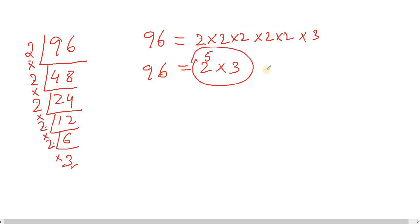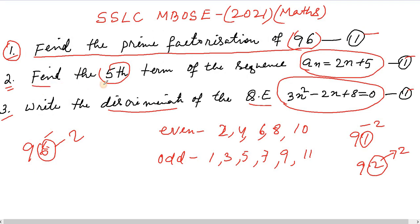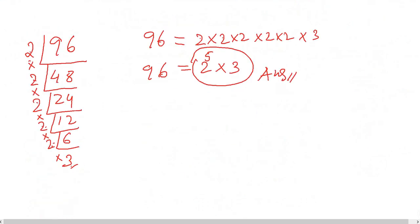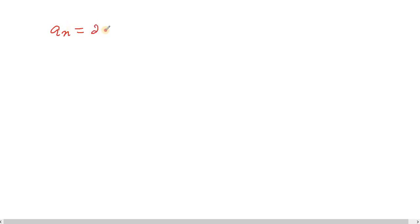That is the answer to question number 1. Moving to question number 2: Find the fifth term of the sequence where a_n equals twice n plus 5.